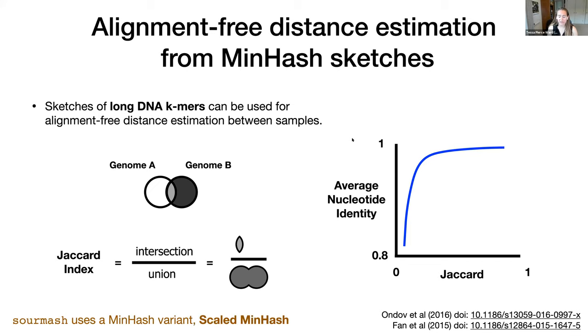SourMash actually uses a minhash variant called scaled minhash, which enables us to do both containment as well as Jaccard index. In particular, this enables comparisons between sets of different sizes.